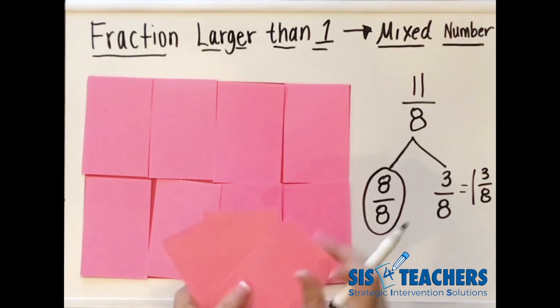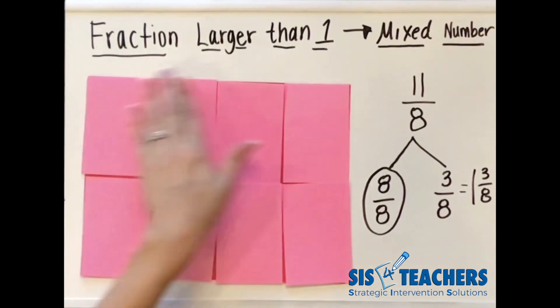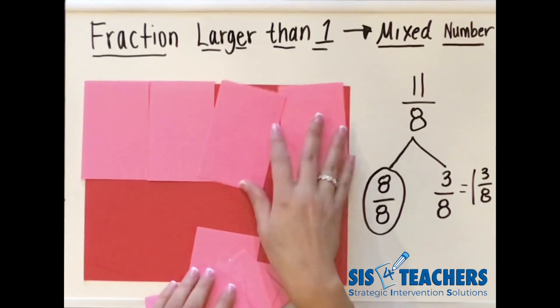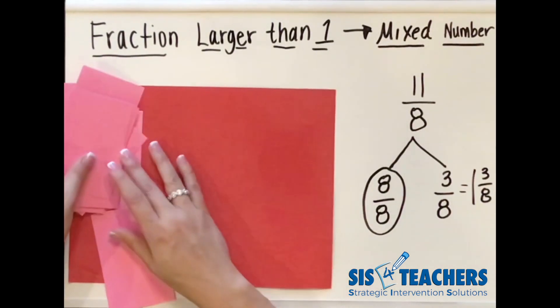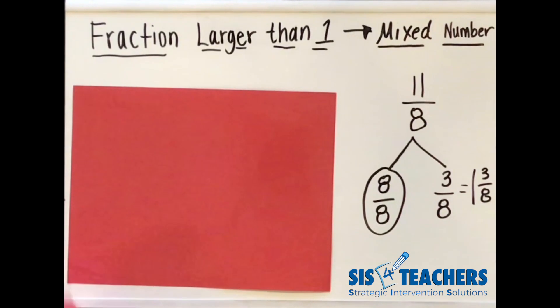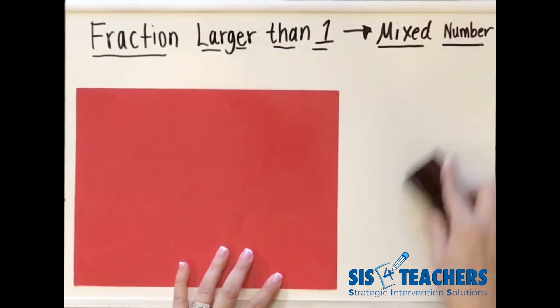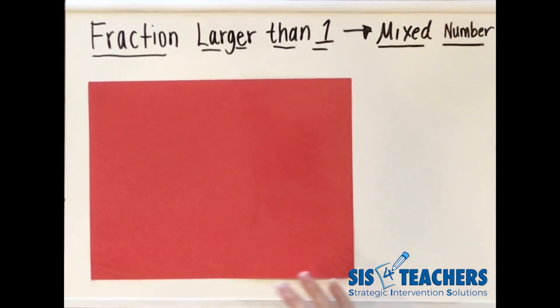When you're using fractions larger than one and taking them into a mixed number, it's really important for students that don't understand it to have them use pattern blocks, maybe patty paper, even the area model papers to help them understand. Let's try another example to see before you try this out on your own in your classroom. We're going to erase the board and come up with another fraction.